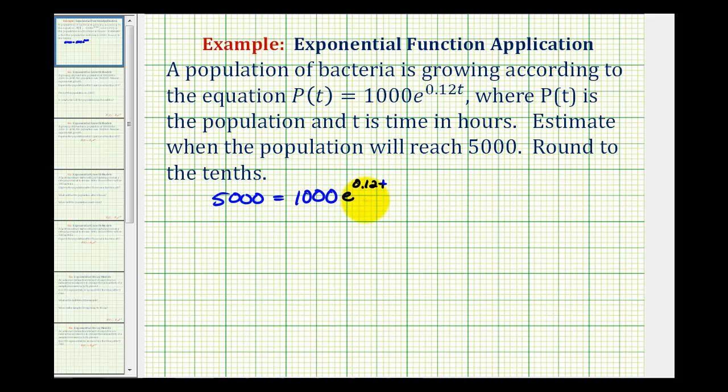Since we have an exponential equation, we're going to isolate the exponential part, or e^(0.12t), and then take the log of both sides of the equation. Let's start by dividing both sides by 1,000.